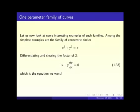The simplest example is a family of concentric circles: x² + y² = C. Differentiating: 2x + 2y·dy/dx = 0. The constant C disappears. Dividing by 2: x + y·dy/dx = 0. That is the differential equation 1.33 for the one-parameter family x² + y² = C.